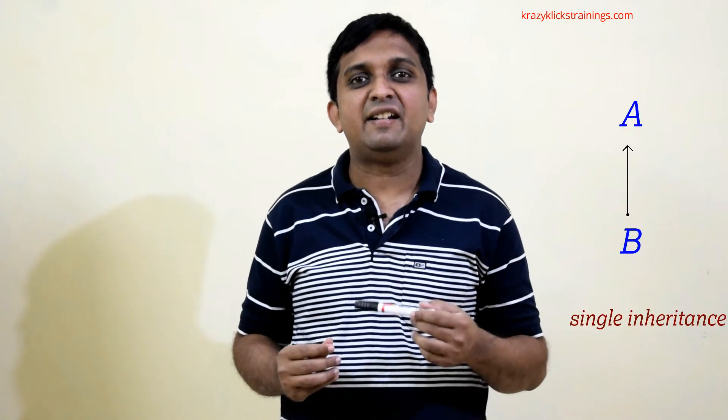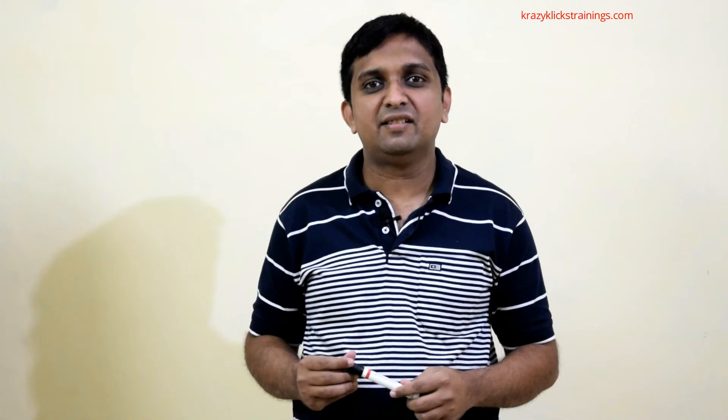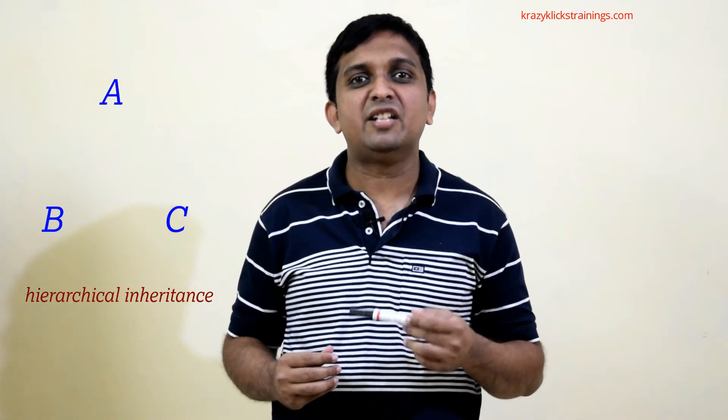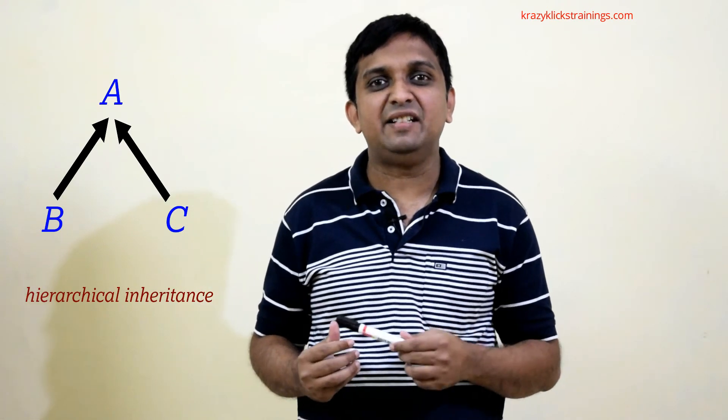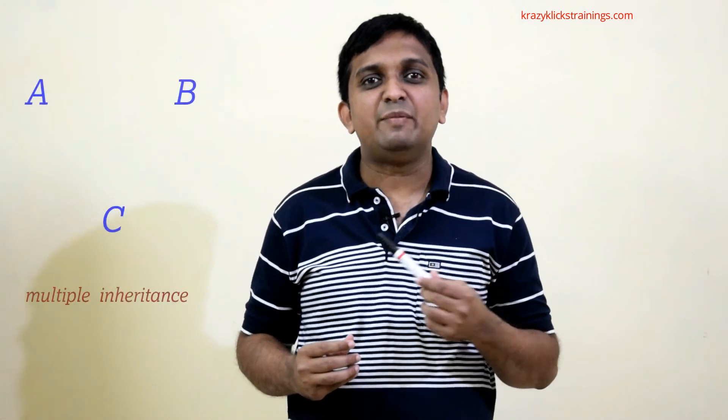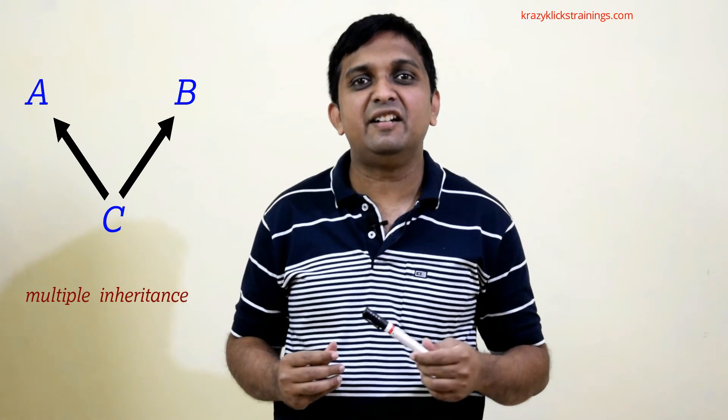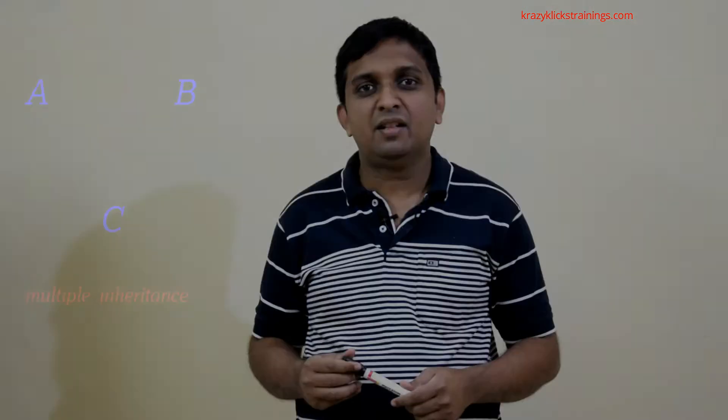Under single-level inheritance there are three subtypes. First is single inheritance, where class B inherits class A. Second is hierarchical inheritance, where one parent class A has more than one child — say B and C — both inheriting from A. Third is multiple inheritance, where class C inherits from more than one base class, such as both A and B.